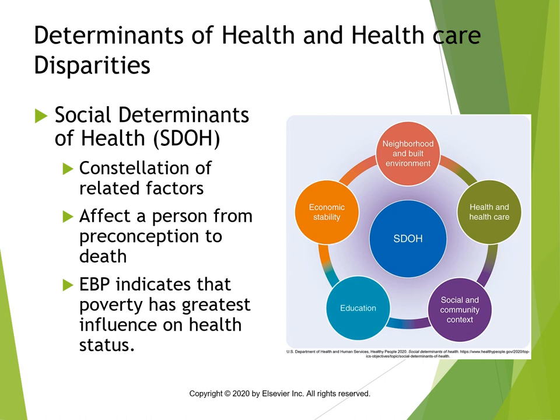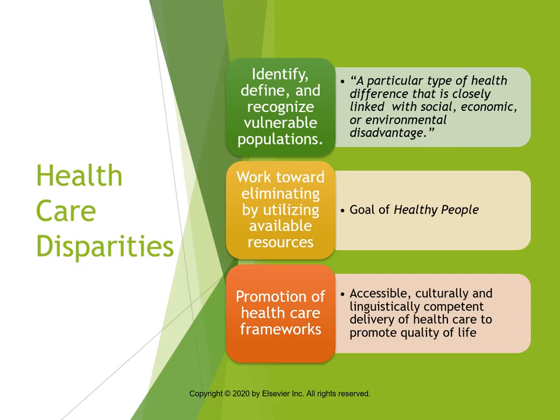It is important to mention the social determinants of health. This includes an array of related factors that affect a person throughout their lifespan. These factors may include neighborhoods, health, social and community factors, education, and economic stability. Evidence-based practice indicates that poverty has the greatest influence on health status. It is important to utilize social determinants of health to identify and recognize vulnerable populations. In recognition of health care disparities, we can work towards eliminating them and utilizing our resources. An example of this are the goals of Healthy People. As nurses, we want to utilize accessible and culturally competent health care to promote the quality of life for all people.